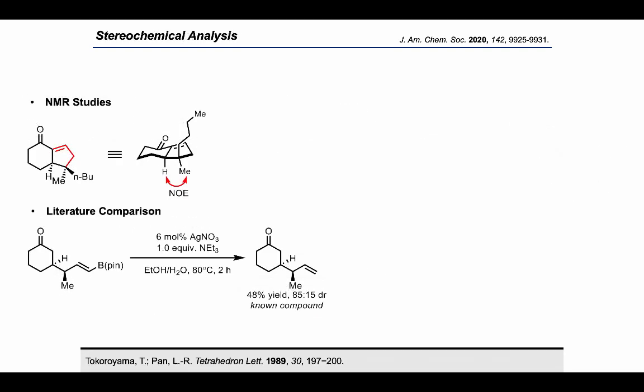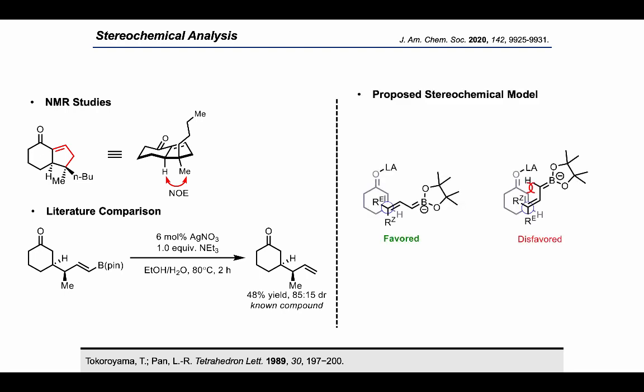Our next steps led us to determine the stereochemistry of our products. We were able to observe an NOE on a carbocyclic enone through NMR experiments to determine the structure. This was further corroborated by protodeboration of the following compound to generate a known structure in the literature. With this information in hand, we proposed a stereochemical model for the reaction in which the favored allylcarbanion addition to an enone, activated by a Lewis acid, allows for stereoselective carbon-carbon bond formation, where the nucleophile stereochemistry is transferred to the product with high stereochemical fidelity.